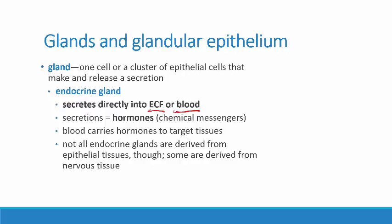The secretions of an endocrine gland are called hormones — chemical messengers sent around the body that change the activity of target body cells. The blood is used to carry the hormones out to the target tissues. When we talk about the endocrine system, we're talking about a number of glands. Most of them are epithelial tissues, but some of them are derived from nervous tissue.